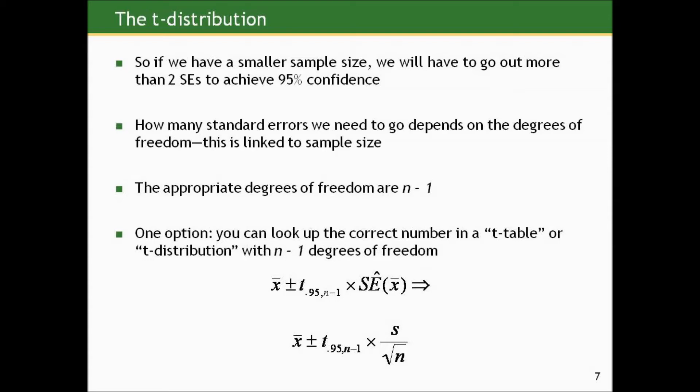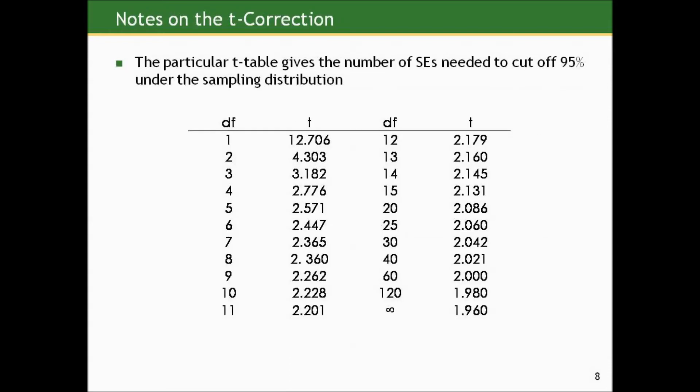If we have a smaller sample size, we may need to go out slightly more than two standard errors to get 95% confidence. How many standard errors we need to go out depends on the degrees of freedom, which is n minus 1. The recipe is now: take the mean and go plus or minus — one way of writing this is the letter T, subscripted with 0.95 and n minus 1 — indicating we want the T value from a distribution with n minus 1 degrees of freedom that cuts off 95% in the middle, times that standard error. We could look this up in a T-distribution table, which you can find online or in textbooks. Here's a particular example of a T table that gives the number of standard errors needed to cut off 95% under the sampling distribution for different degrees of freedom.